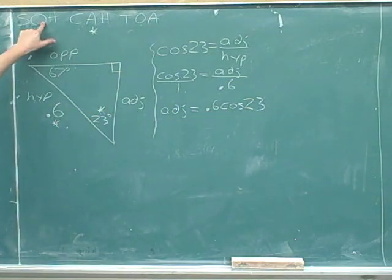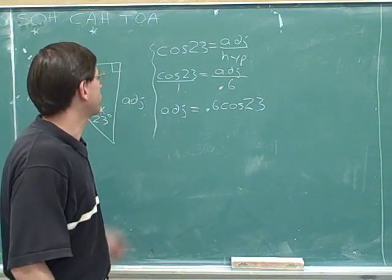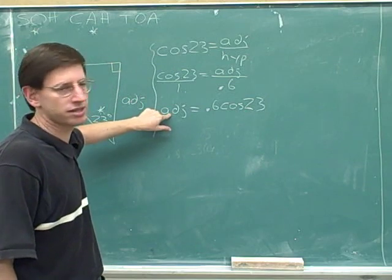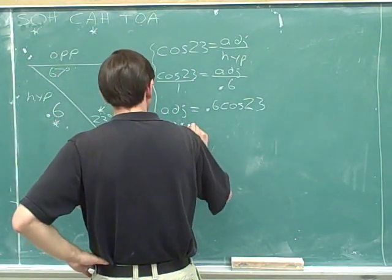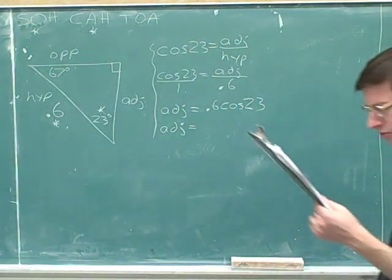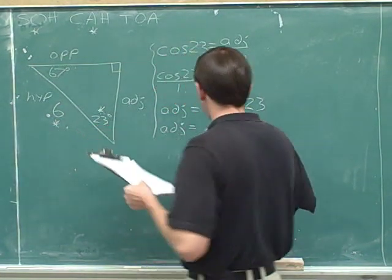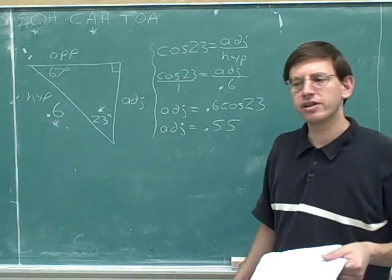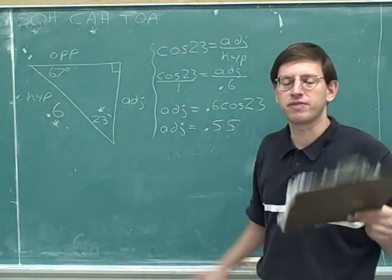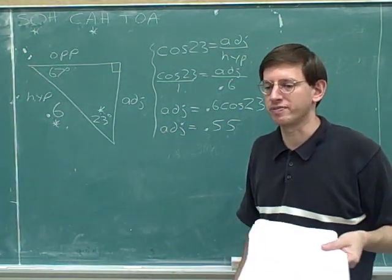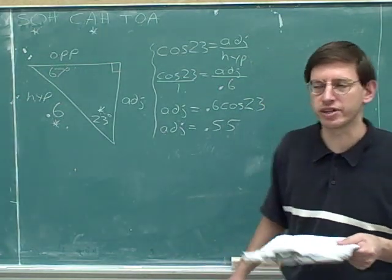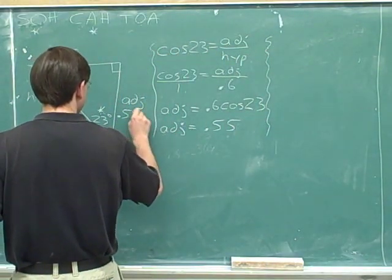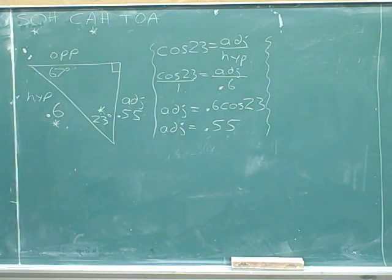We'll see in a second that the opposite side is just the hypotenuse times the sine. If you're comfortable with this type of problem, you might just skip these two steps and go straight to there, but if not, you can still write down these steps. 0.6 times cosine 23, using our calculator, comes out to approximately 0.55. I'm not rounding to the correct number of significant figures — just rounding to what feels good. Anytime you figure something out, build that information into your sketch. The adjacent side has a length of 0.55.